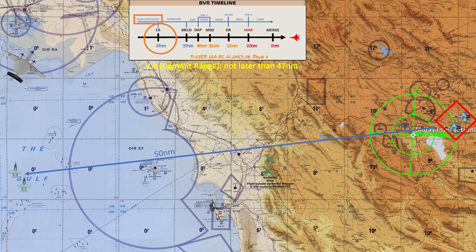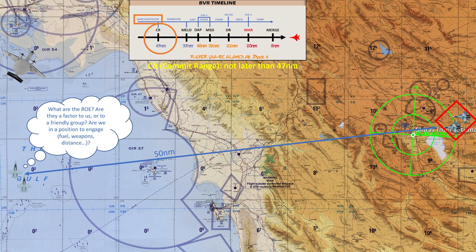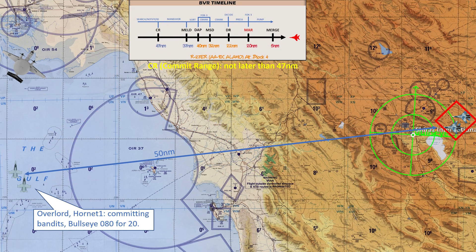In this example, position is given relative to the bullseye, and we determine them to be 50 miles away from us. Next, we assess the situation according to rules of engagement — whether the bandits are a threat to our flight. At 50 nautical miles, if they continue flying towards us they will soon be a factor, or a threat to other friendly flights. As you see, they pose a serious threat. With all the info, a decision is taken — in this case committing to the bandits — and it is communicated to the AWACS.